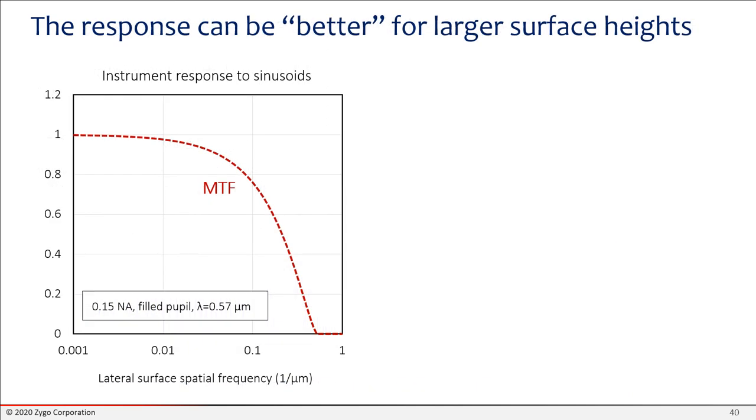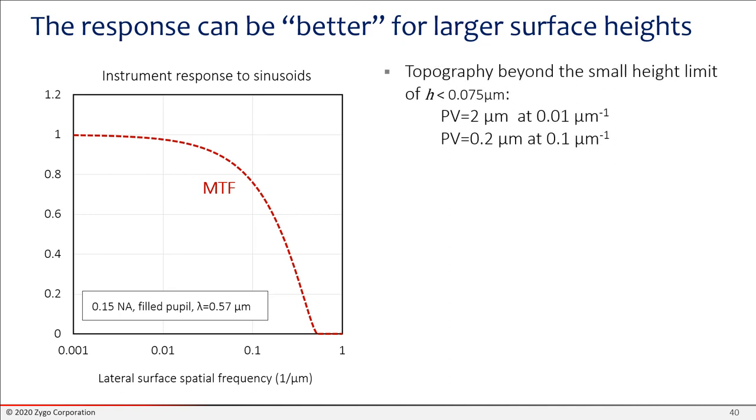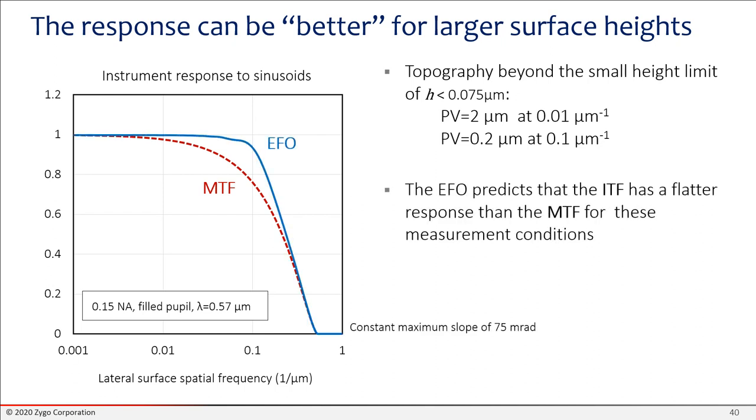For larger surface height variations, larger than this lambda over 8 limit, we find that the response of the instrument varies a little bit. It's no longer following the MTF perfectly. So for example, if we say let's go through a series of sinusoids that meet a slope limit, in other words, the maximum slope on the part is not so large that the light is deflected outside the acceptance of the objective, then you could have a peak valley of up to 2 microns, which is much bigger than the small height limit. And if you calculate using the EFO what the response of the instrument is, curiously enough, you find that it's a bit flatter out to 0.1 inverse microns spatial frequency. I think the key takeaway is that you can calculate this with this model, and that's a useful thing to do, and the calculation is quite quick.